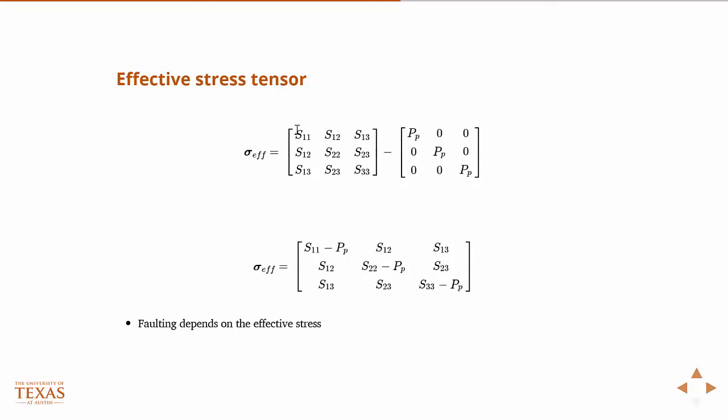So the stresses associated with the normal direction are on the diagonal of any stress tensor. And so we just take our normal stress tensor and we subtract the pore pressure times the identity matrix. And that gives us the effective stress.